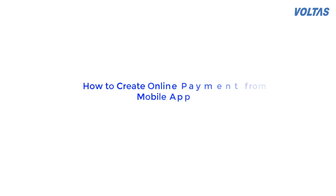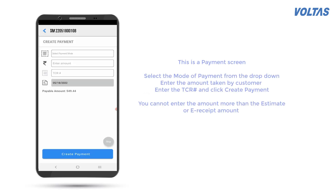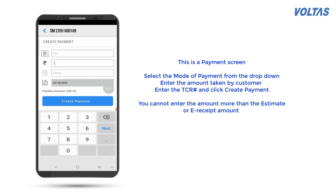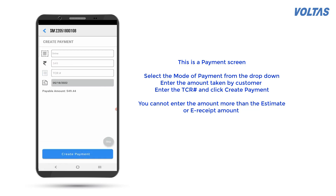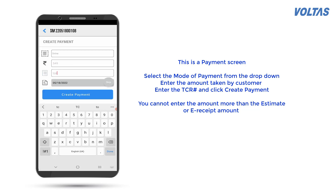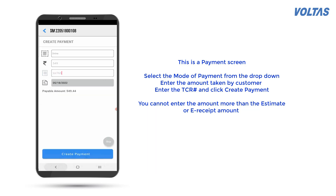How to Create Online Payment from Mobile App. This is a payment screen. Select the mode of payment from the drop-down, enter the amount taken by customer, enter the TCR, and click Create Payment. You cannot enter the amount more than the estimate or e-receipt amount.